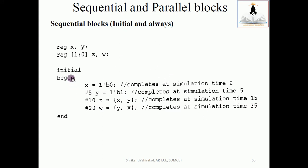Let's take an example to analyze it. I have an initial block here. I've declared X and Y as a register of single bit, and Z and W as a register of two bits. Initial begin: X is initialized at zero at zero simulation time. After five time units, Y is initialized as one. After five plus ten, fifteen time units, Z is initialized as X comma Y, that is concatenation of X. X is zero and Y is one, zero one. And after 20, that is 15 plus 20, 35, W will be assigned with Y and X reverse of it, one zero.